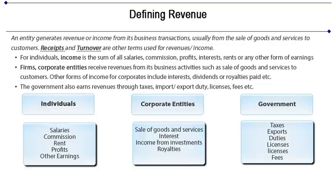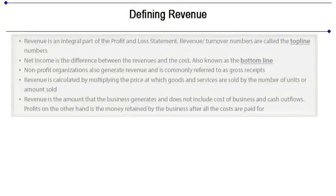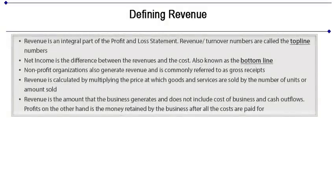Other forms of income for corporates include interest, dividend, or royalties paid. The government also earns revenues through taxes, import-export duty, licenses, fees, etc. Revenues is an integral part of the profit and loss account statement. Revenue turnover numbers are called the top line numbers. Net income is the difference between revenues and cost, also known as the bottom line. Net profit is the other term used for bottom line numbers. Non-profit organizations also generate revenues, commonly referred to as gross receipts.